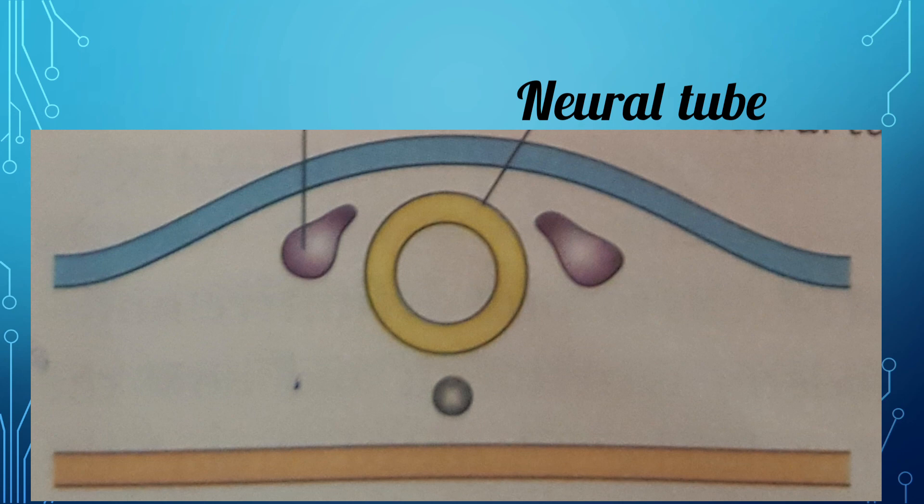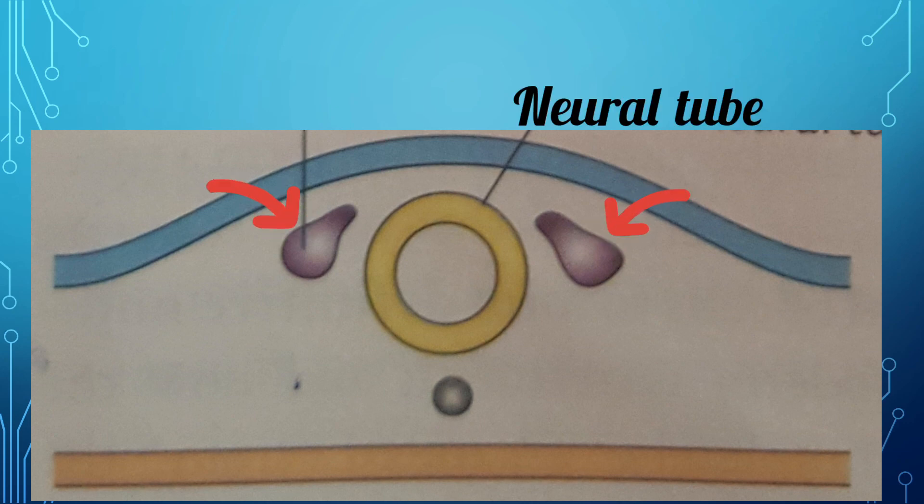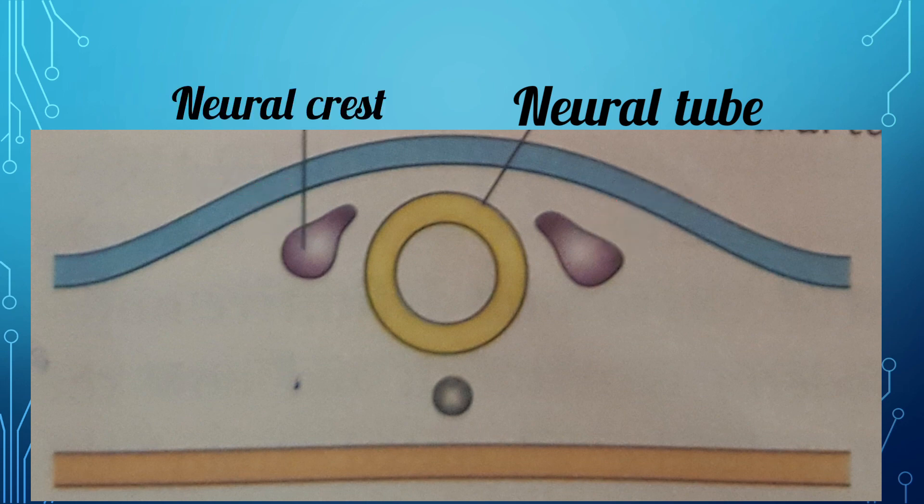During the fusion of the neural folds, the cells at the tips of the neural folds do not take part in the neural tube formation. They remain as bilateral masses of cells lateral to the neural tube. The cranial part of this neural tube forms the brain and the caudal part remains tubular and forms the spinal cord.